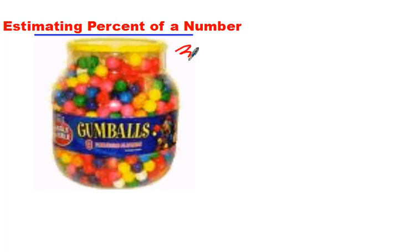If I tell you that there are 300 gumballs in this jar and you can have 50% of them, think about what that means. 50% is the same as one half. Half of 300 is 150 gumballs.